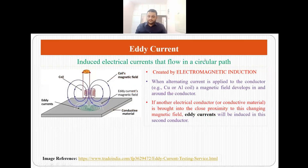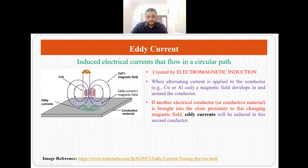Now what are eddy currents? Eddy currents are the induced electric currents that flow in a circular path. They are generated by a phenomenon called electromagnetic induction. Suppose you have a conductor in the form of a copper or aluminum coil and if you pass alternating current or varying current through this coil, then because of this flow of varying current there will be a magnetic field which will be generated inside and around the conductor.